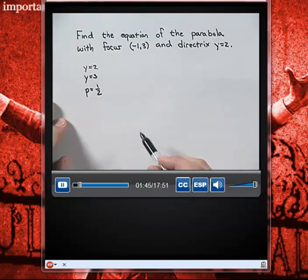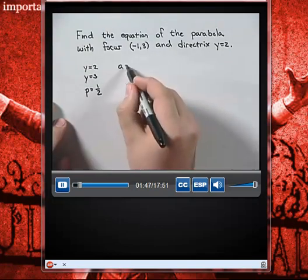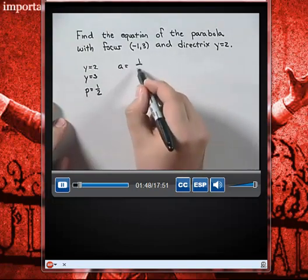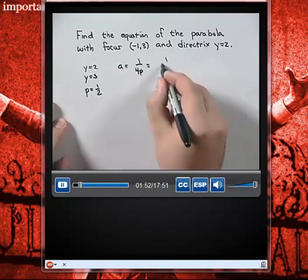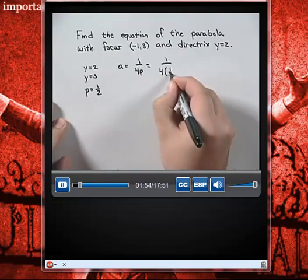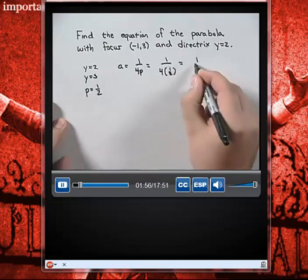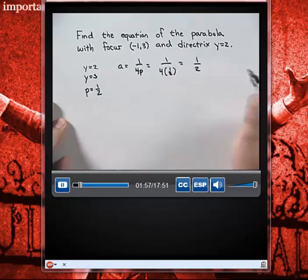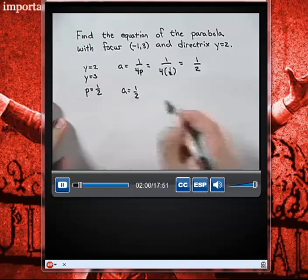Using the equation a equals 1 over 4p, we substitute p equals 1 half and get 1 over 4 times 1 half, which is 1 over 2. So now we know our value of a is equal to 1 half.